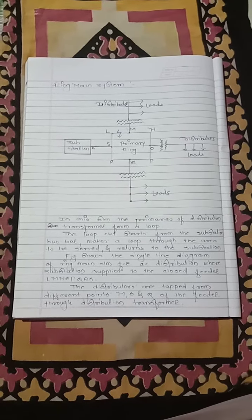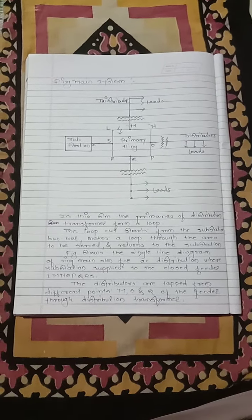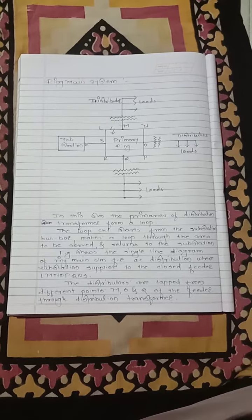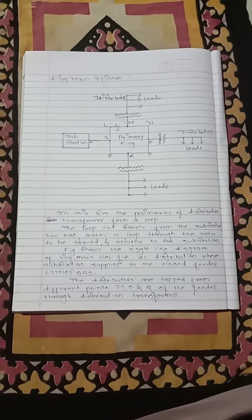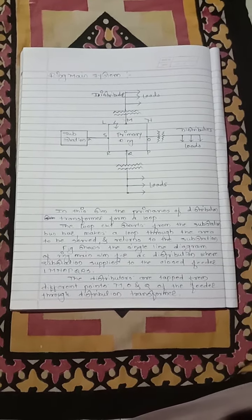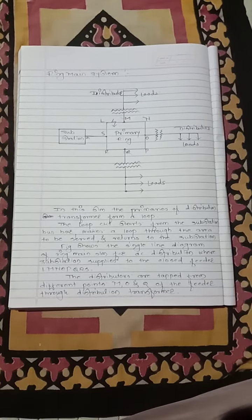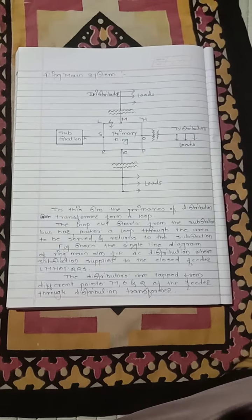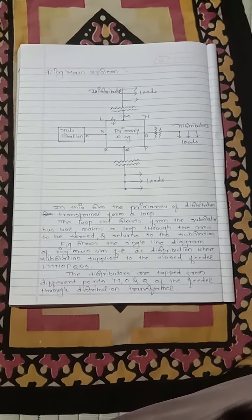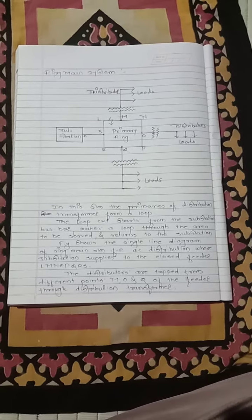In a ring main system, the primaries of distribution transformers form a loop. The loop circuit starts from the substation bus bar, makes a loop through the area to be served, and returns to the substation.